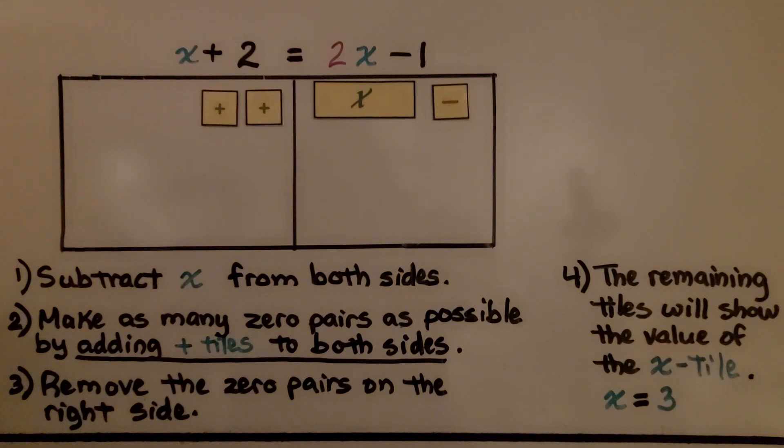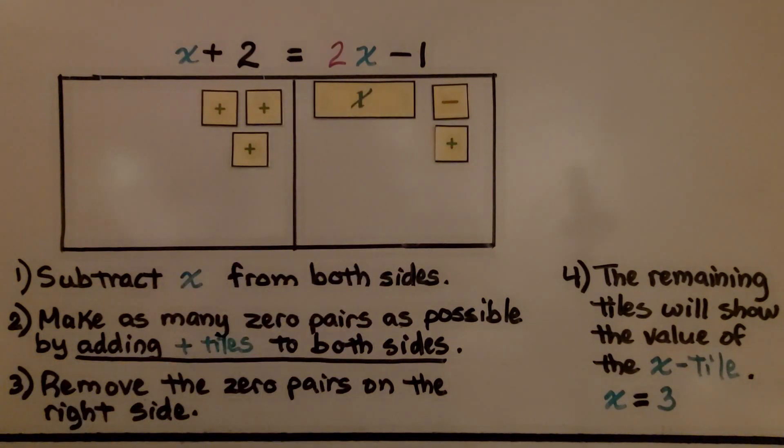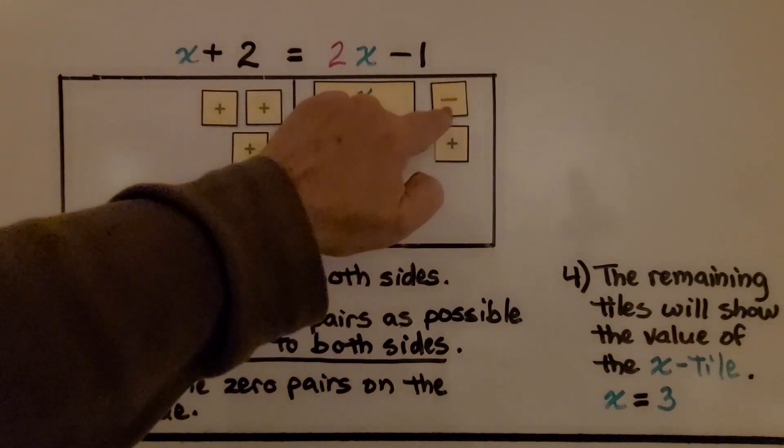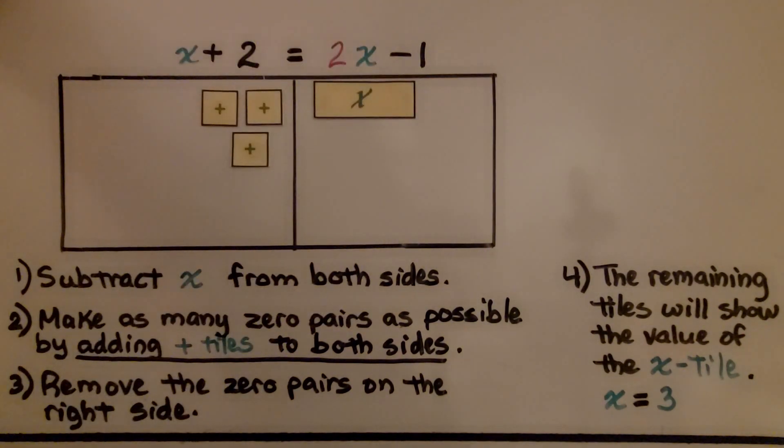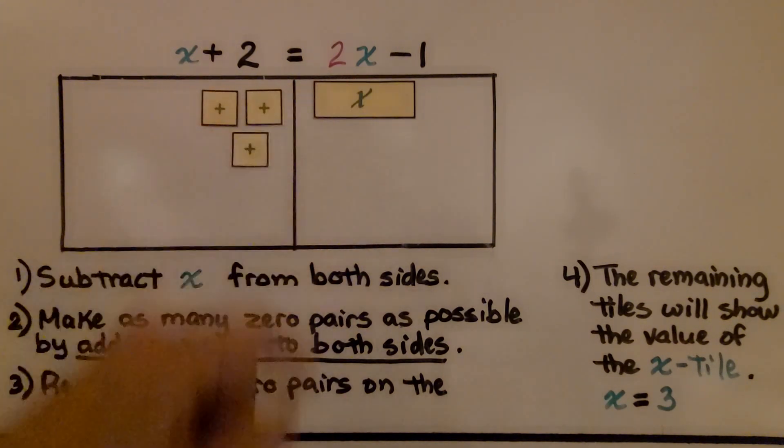The second thing we do is make as many zero pairs as possible by adding plus tiles to both sides. We add 1 plus to this side and we add 1 plus tile to this side. Now we remove the zero pairs on the right side. We have one zero pair here, a plus and a minus that cancel each other out. So we're going to remove that. The remaining tiles will show the value of the x tile. It's equal to 3.